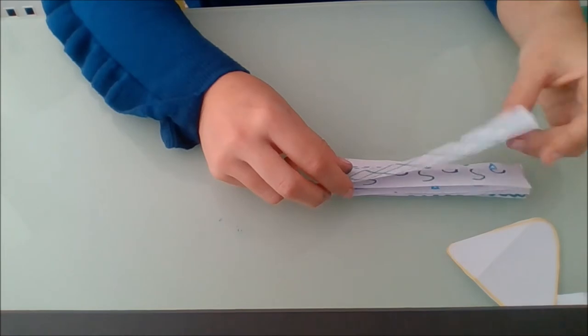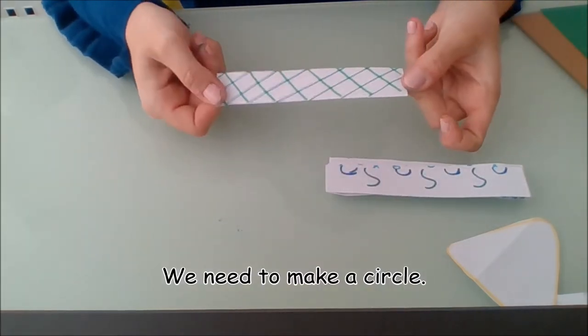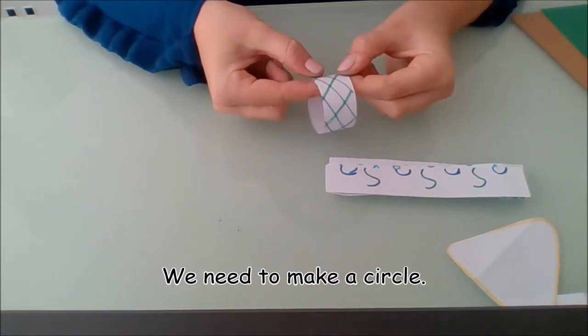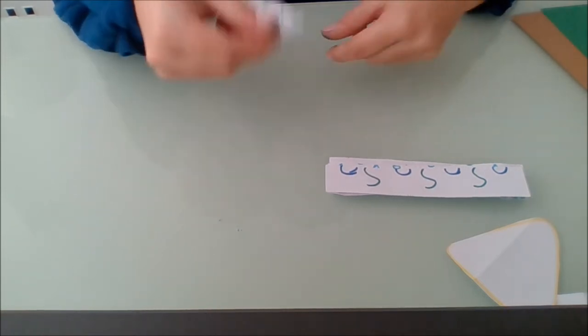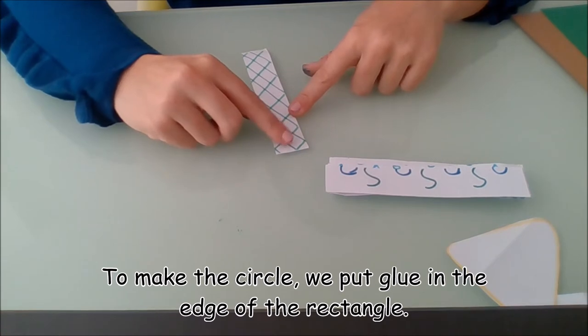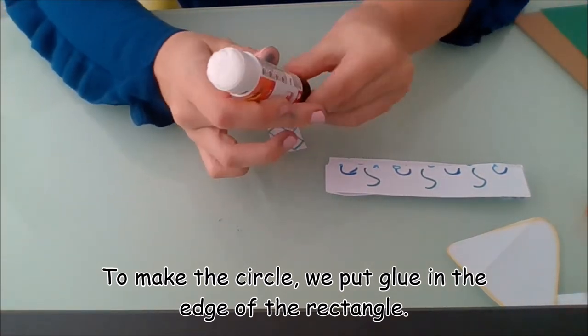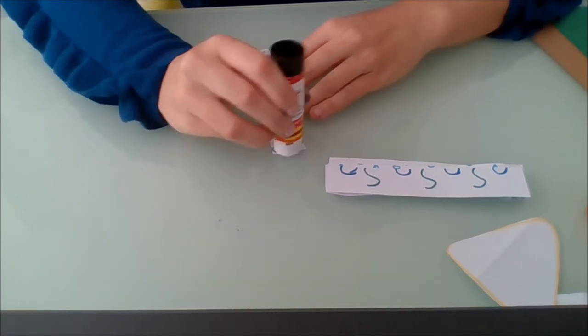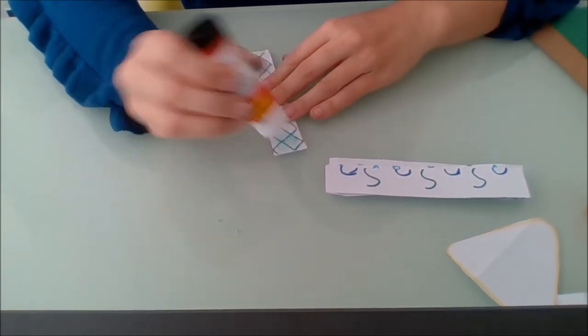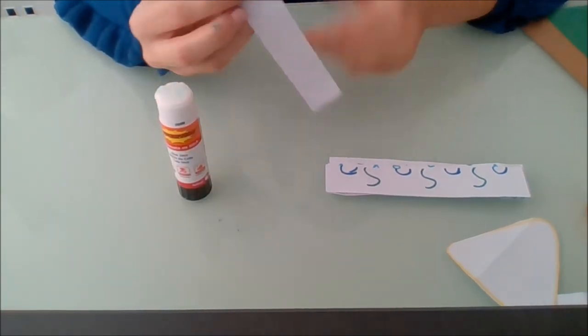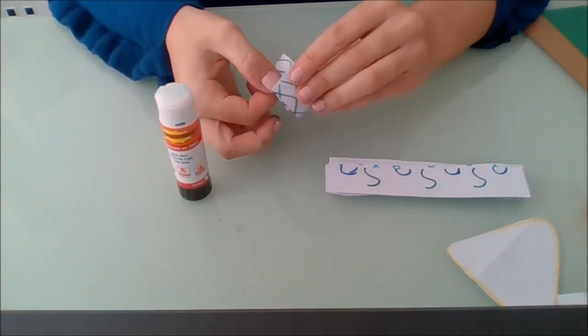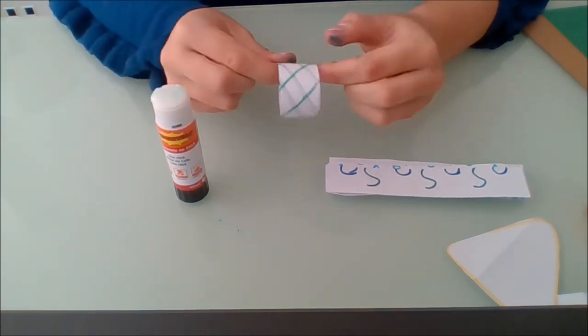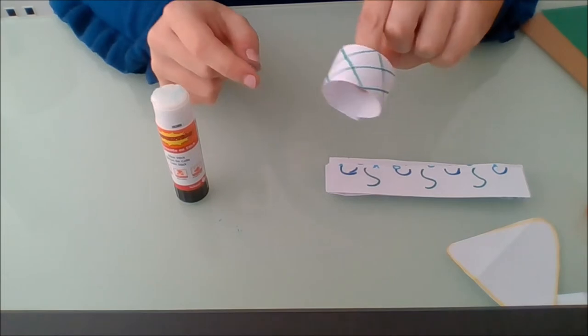What we do now, we get one paper, we turn it and we make a little circle. To make the little circle, in one of the edges we're going to put some glue and we press. Did you see what I did there? So now we have one.